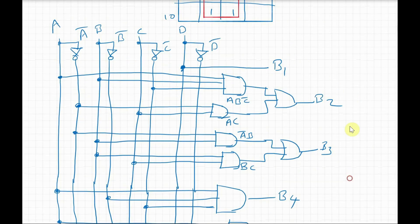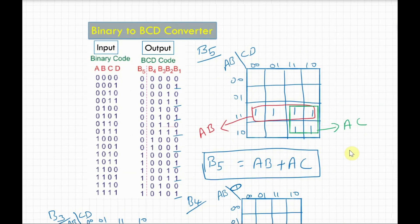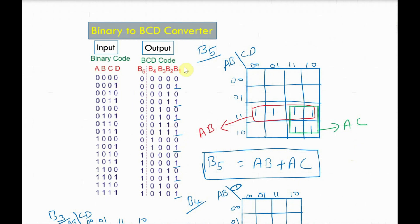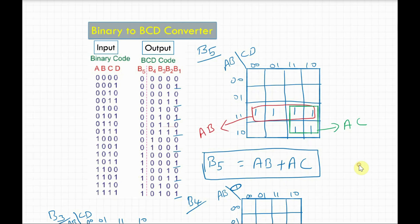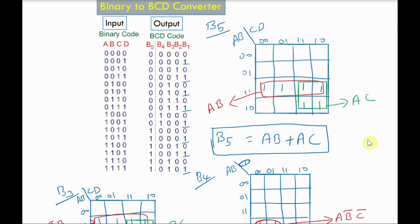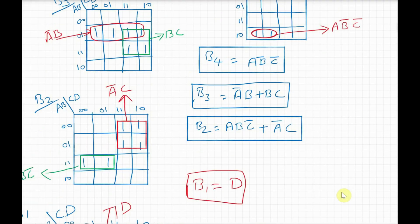So this is all what we have done. We first drew the truth table showing the binary input and BCD output. The next step was to find all output variables in terms of the inputs — the logic expressions for b5, b4, b3, b2 and b1 in terms of a, b, c, d. For that we used Kmap, drawing the 4-variable Kmap for each output, mapping the ones, simplifying, and doing the same procedure for all five outputs. Once we found all the logic equations, we drew the logic diagram.